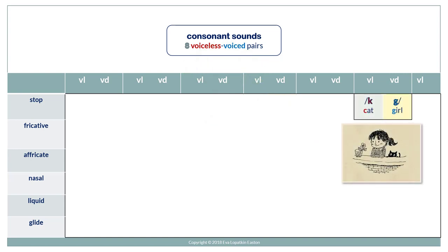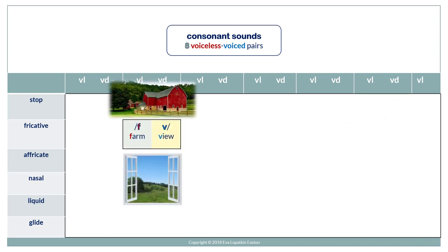C and G — cat, girl. F and V — farm, view.